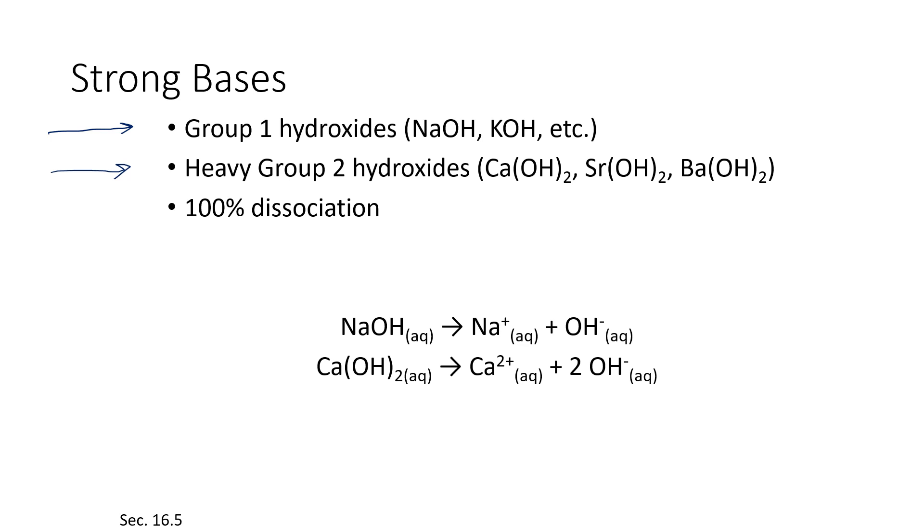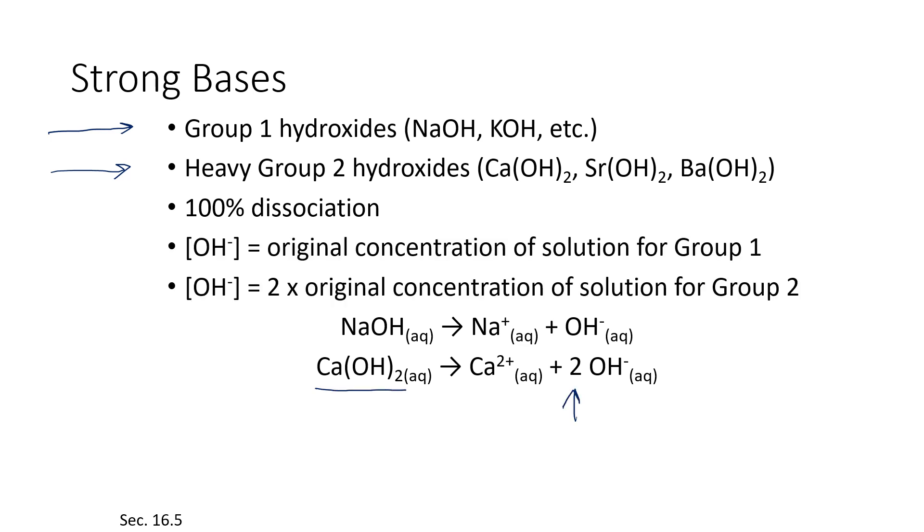Every last little bit of NaOH is broken apart to sodium ions and hydroxide ions. If it's a group 2 hydroxide, it's kind of an interesting thing here because for every one calcium hydroxide that dissolves, you actually are going to get two hydroxide ions. So you get more hydroxide ions from the group 2s than you get from an equal concentration of group 1s.